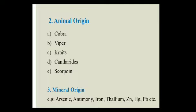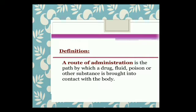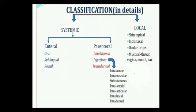In mineral origin poisons, we have: arsenic, antimony, iron, thallium, zinc, mercury, and lead. The full list corresponding to your syllabus will be covered in detail. Now let's talk about the route of administration of poison — by which pathways poison can enter our body. The definition: route of administration is the path by which a drug, fluid, poison, or other substance is brought into contact with the body. Broadly, it is classified into two groups: systemic and local.